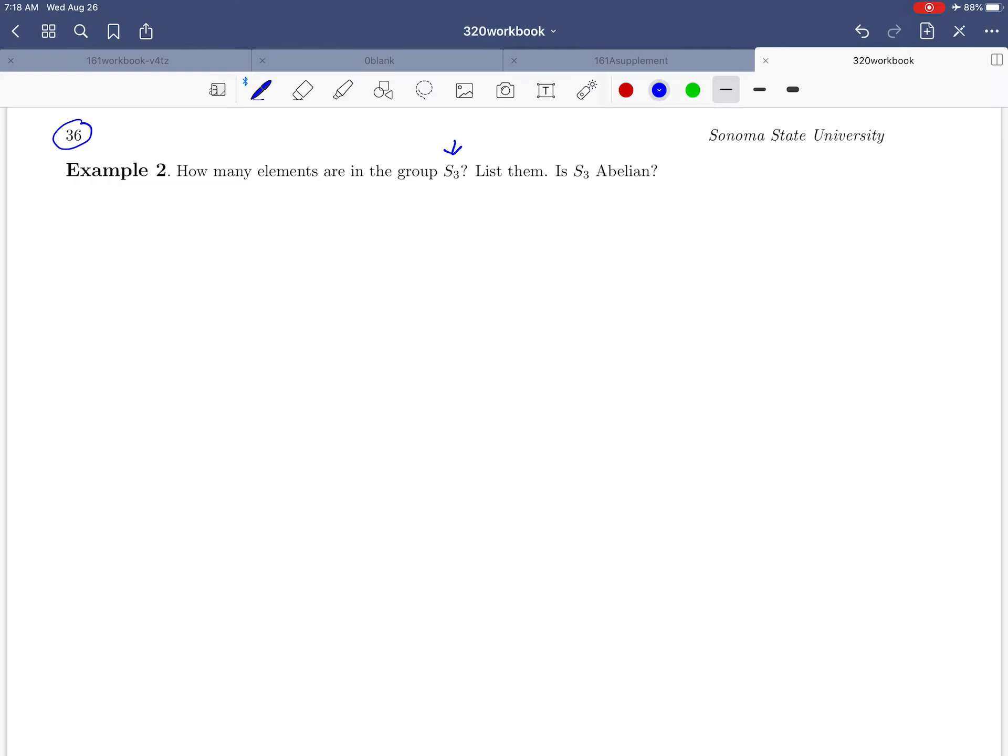Let's start with the first question. It's asking us how many elements are in this group. Now remember what we're talking about when we say S3. This is a group of functions, in particular the group of permutations from the set {1, 2, 3} to itself. We'd like to count the number of different permutations that there are. So let's revert for a minute back to the matrix notation for a permutation. We would start with the domain, the set of inputs of 1, 2, and 3.